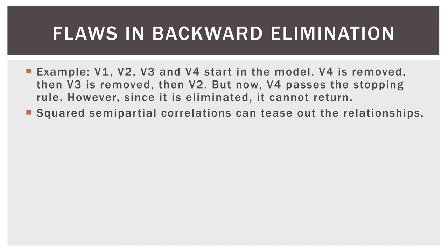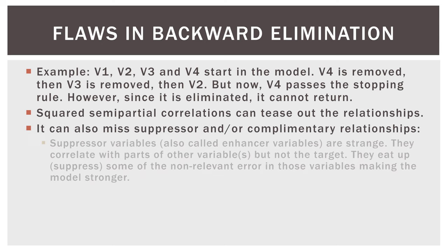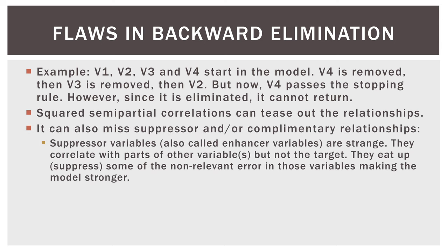So squared semi-partial correlations, which we talked about at length in the forward selection video, can tease out the relationships. It can also miss suppressor and or complementary relationships. I don't want to go into this in great detail, but suppressor variables are kind of weird variables where a first variable correlates with the dependent variable or the target variable to some degree. That's, I think I used 0.4 in the previous video. That leaves 0.6 unexplained to the target variable. Well, a second variable comes in, and it is not correlated with the target variable, but it is correlated with the 0.6 of the first variable. Hope that makes sense. So a suppressor variable can actually correlate with a part of another variable without correlating to the target variable.